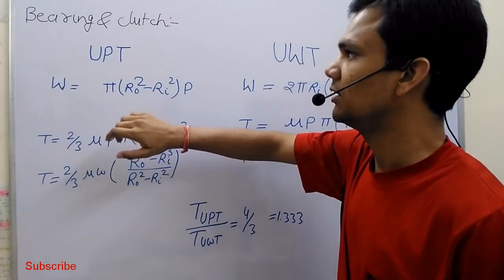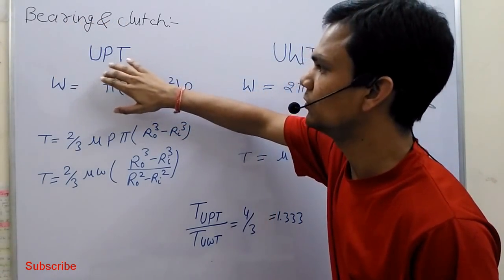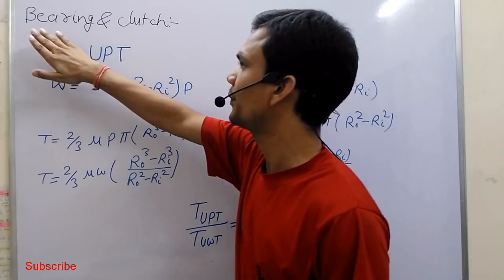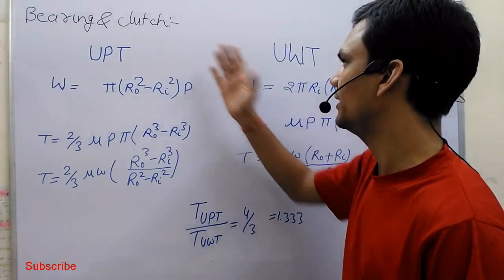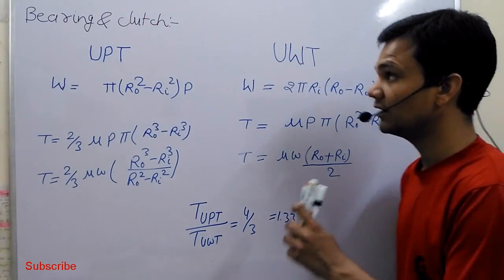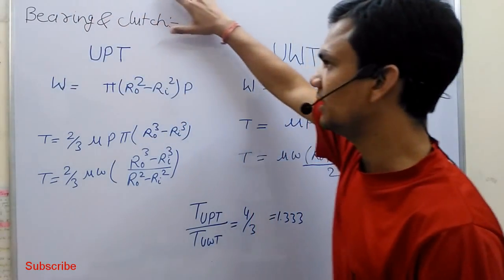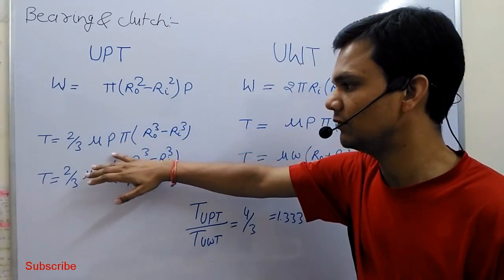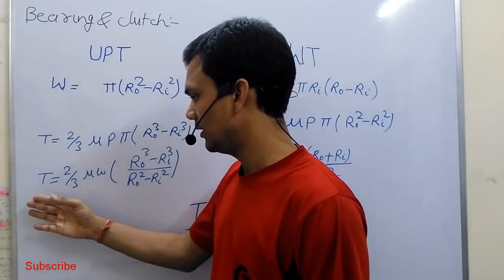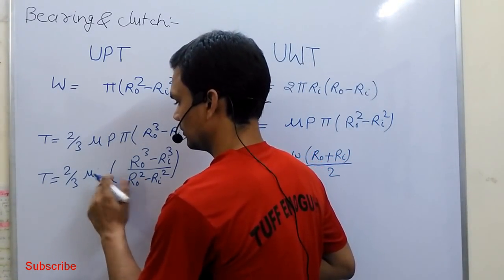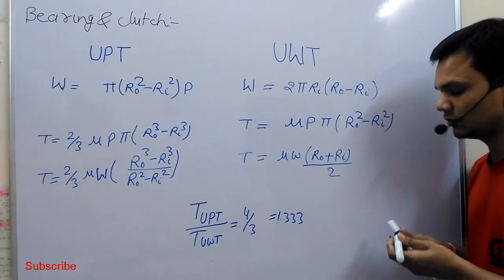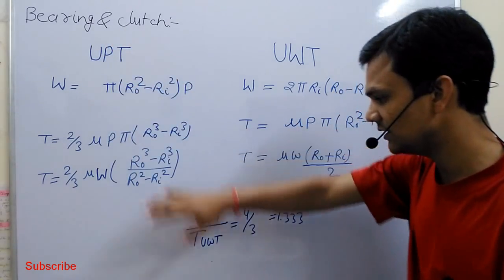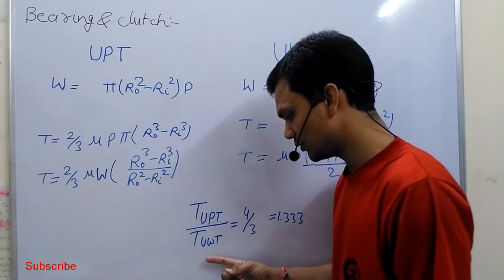Let's discuss bearing and clutch. In bearing and clutch, two types of theories are used: uniform pressure theory and uniform wear theory. The formulas for both bearing and clutch are the same. For uniform pressure theory, the load formula, torque in terms of pressure, and torque in terms of load are given. For uniform wear theory, the load formula, torque in terms of pressure, and torque in terms of load are given. You can see that torque in uniform pressure theory is 4/3 times that of uniform wear theory.